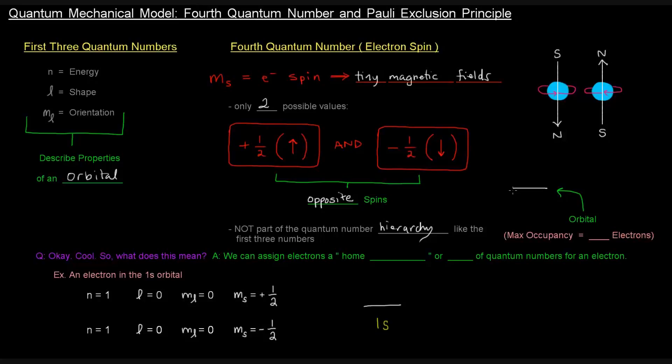So now an orbital, we mentioned this a little bit before, can be represented by a line or a box or a circle that can be filled by electrons. So the maximum occupancy for an orbital is two electrons. And if this is one orbital here, it can have two electrons in it, represented by these arrows. So one would be spinning upwards, and one is spinning downwards.